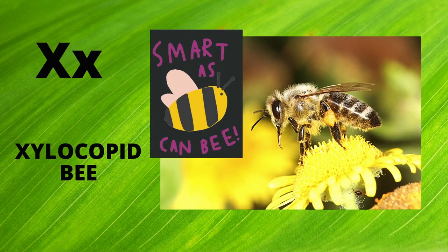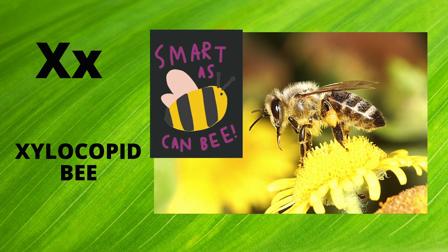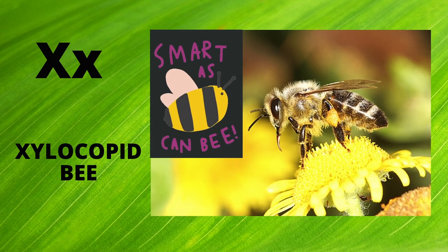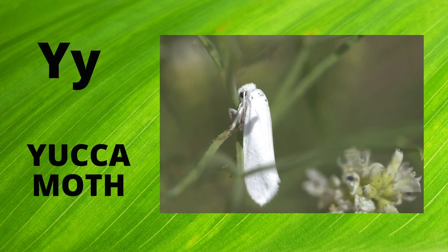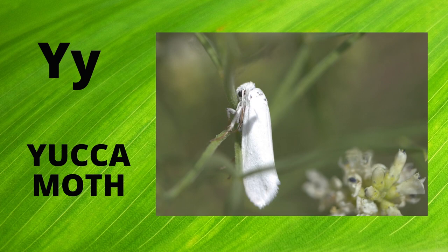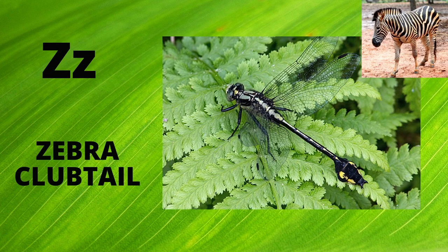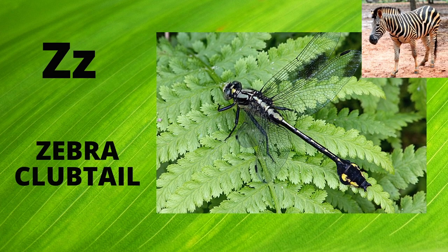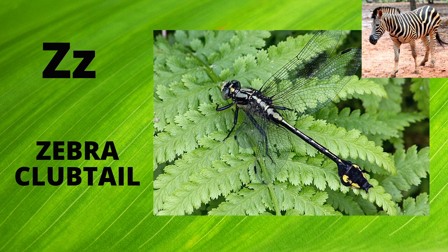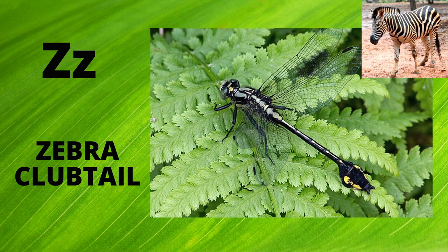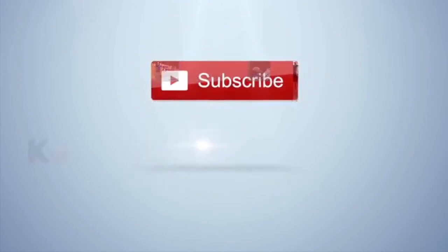W is for Wasp. W. Wasp. X is for Silkcopped Bee. X. Silkcopped Bee. Y is for Yucca Moth. Y. Yucca Moth. Z is for Zebra Clubtail. Z. Zebra Clubtail. Kaylee and Kayden TV. Yay!